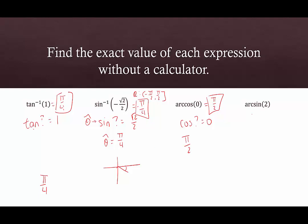And lastly, arc sine of 2. This is saying: sine of what value is equal to 2? That's not possible. If you check the domain for arcsine, 2 is not within the domain. We can't take sine of something and get 2. This does not exist — it was a trick question.